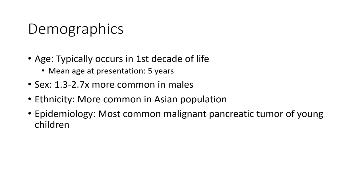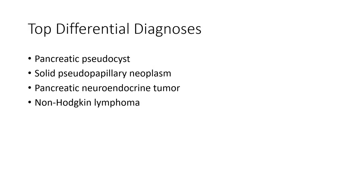Epidemiology: pancreatoblastoma is the most common malignant pancreatic tumor of young children. Top differential diagnoses include pancreatic pseudocyst, solid pseudopapillary neoplasm, pancreatic neuroendocrine tumor, and non-Hodgkin lymphoma.